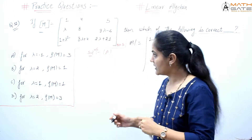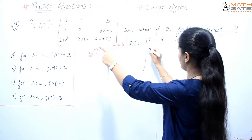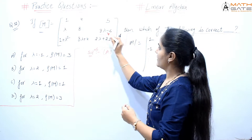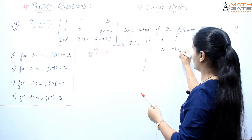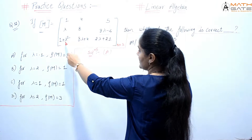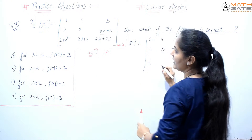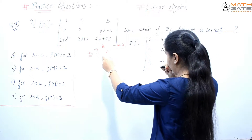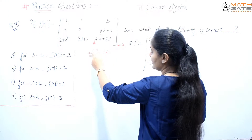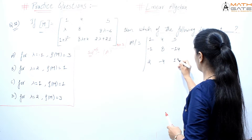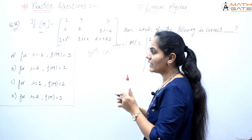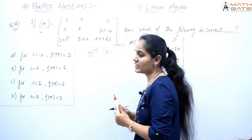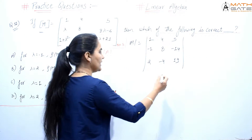Let's start with option A, where lambda equals -1. Substituting λ=-1: the first row is [1, 4, 5], then λ=−1 gives 8λ = −8, and −6 gives −14. Then 1+λ² = 1+1 = 2. Then 8λ+4 = −8+4 = −4. And 2λ+21 = −2+21 = 19. So the matrix becomes [1, 4, 5; −1, −8, −14; 2, −4, 19]. Option A claims this matrix has rank 3.